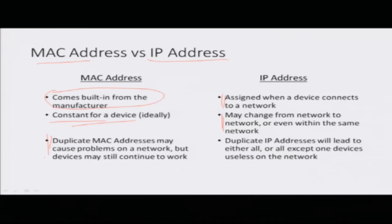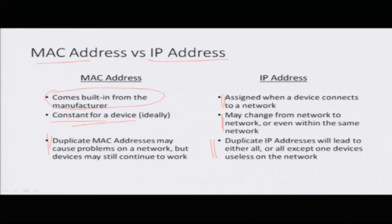Duplicate MAC addresses may cause some problems on the network — they can cause some havoc at the lower levels of routers and switches — but in general the network will still probably continue to work. In case of duplicate IP addresses, the system will take action and kick out the erring entities, keeping only one. So at the end, only one entity with one IP address will sustain itself on the network. That is why IP addresses are almost always unique on the network.